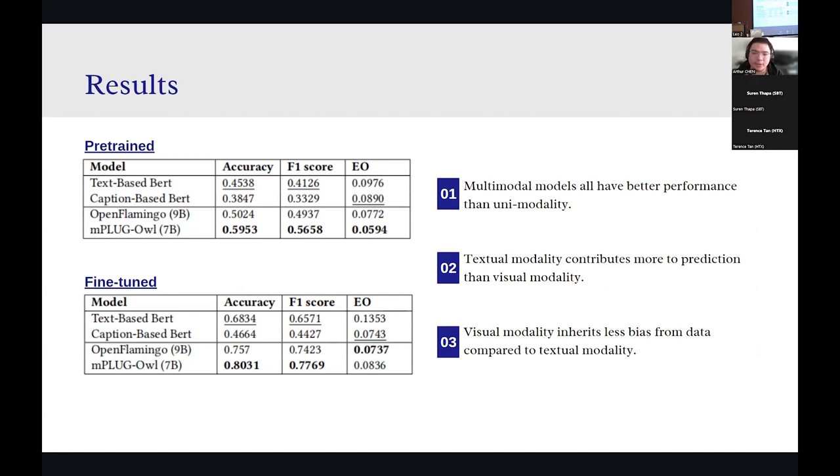The first finding is that multi-modal models all have better performance than unimodality. That means textual modality and visual modality, they can complement each other to achieve overall better results. The second finding is that the textual modality contributed more to the prediction than visual modality as it scores higher for both performance metrics in both cases. The last finding is that although the textual modality has higher performances, the visual modality inherited less bias from the dataset compared to the textual modality, due to its lower score in the equalized odds, especially in the fine-tuning cases.